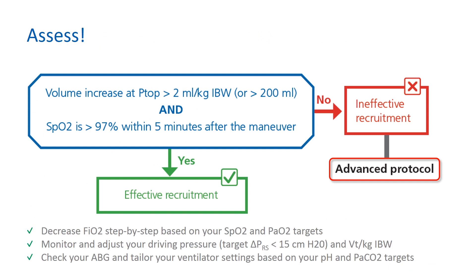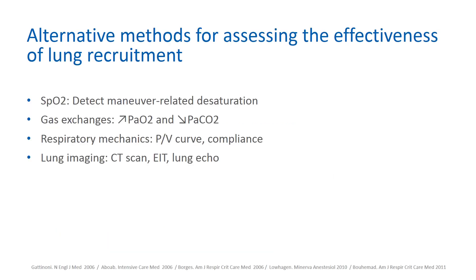If those criteria were not met, proceed to the advanced protocol. It is important to assess whether the recruitment maneuver was effective. SpO2 can be used with caution because it is dependent on cardiac output, which may decrease during and directly after the recruitment maneuver. Gas exchange can also be used — for example, an increase in PF ratio with a decrease in pCO2 for the same minute ventilation is in favor of recruitment. Compliance has pitfalls and should be used with caution to assess optimal recruitment. Lung imaging can also be used.